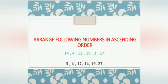So, the smallest number is 3, then 4, then 12, 14, 19 and finally 27 is the largest number. So we will arrange 3, 4, 12, 14, 19 and 27.